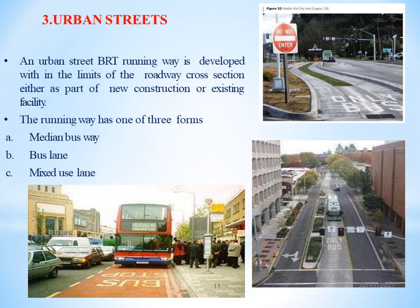An urban street BRT running way is developed within the limits of the roadway cross section, either as part of new construction or an existing facility. The running way has one of three forms: median busway, bus lane, or mixed-use lane.